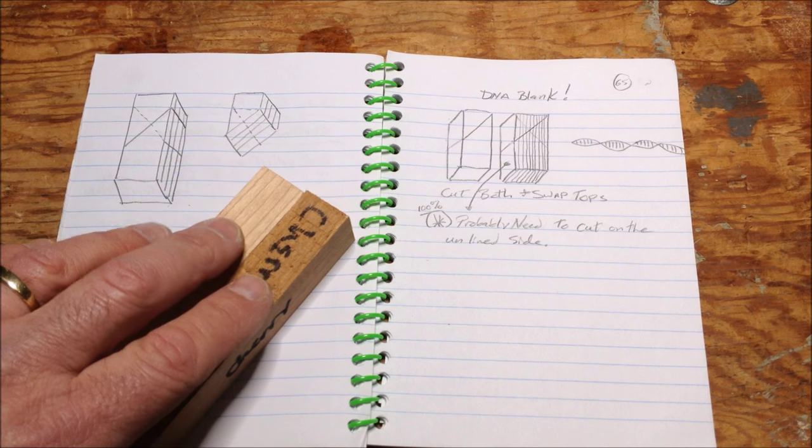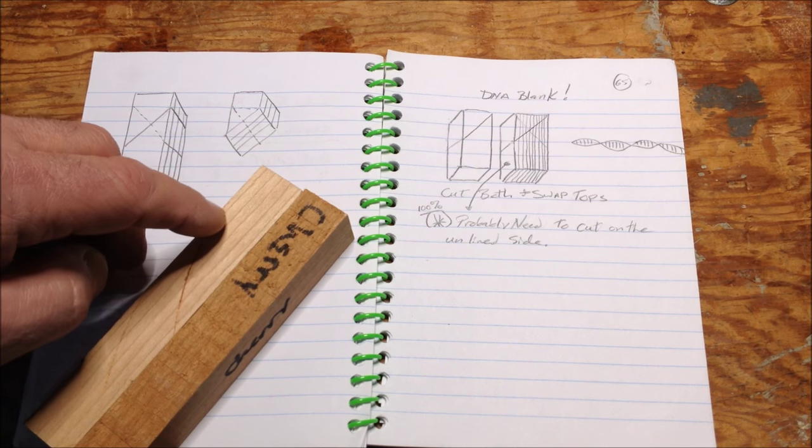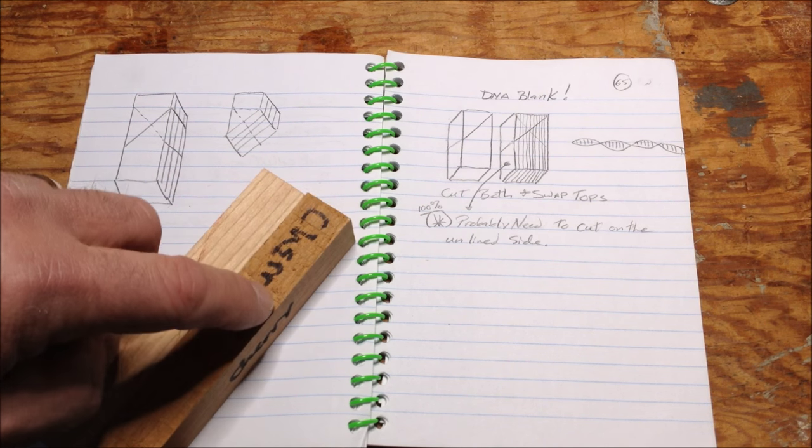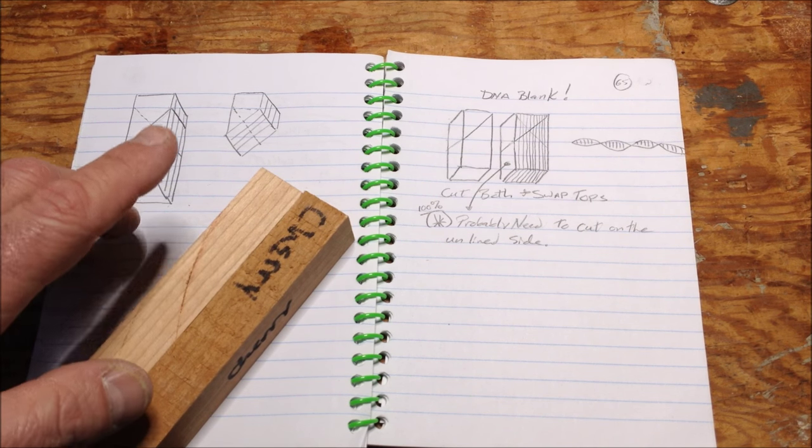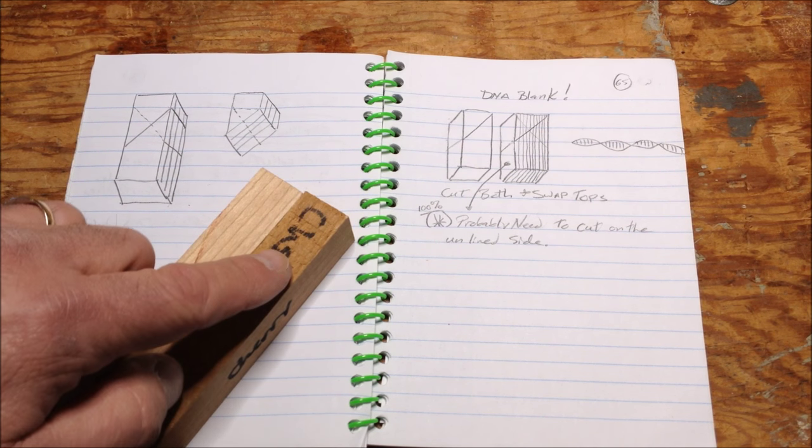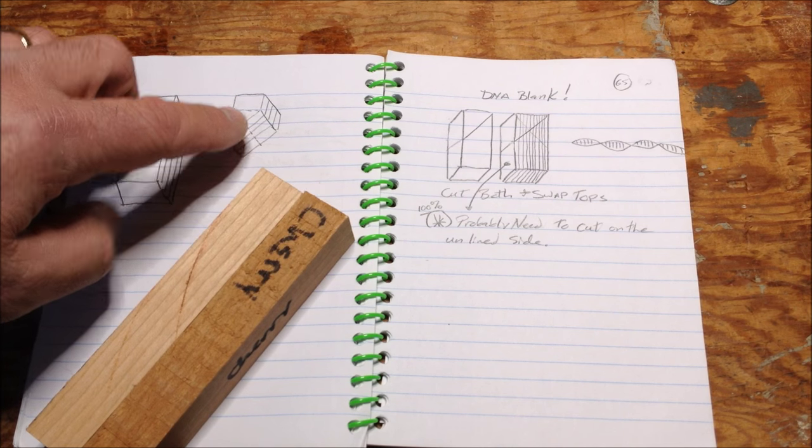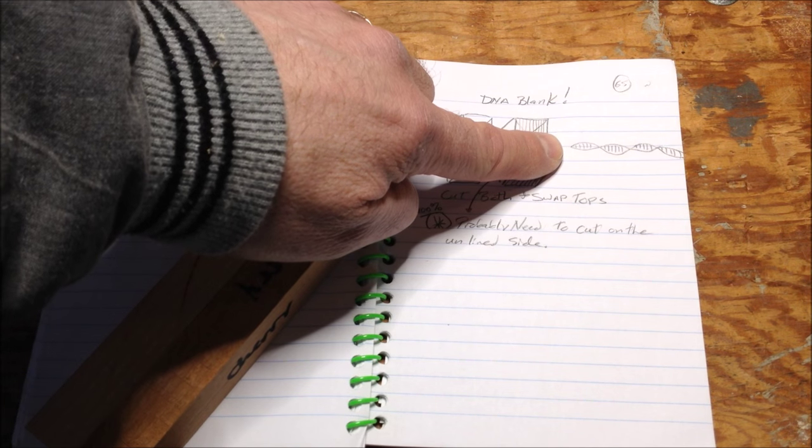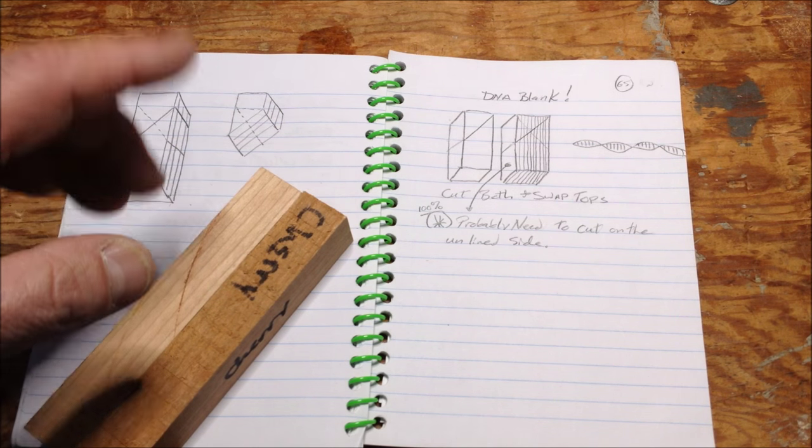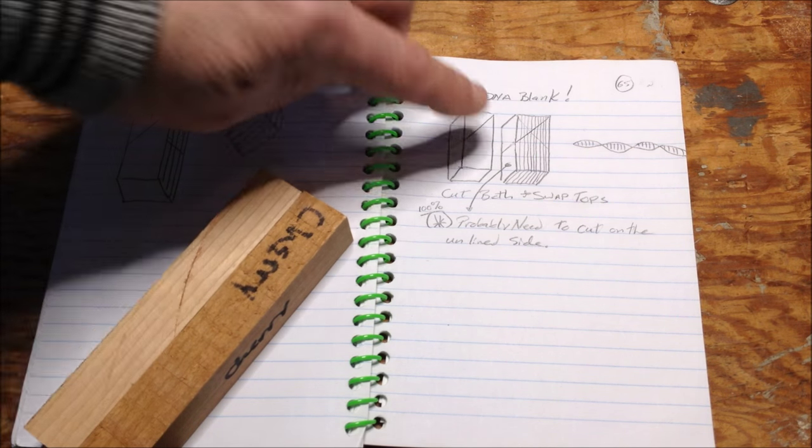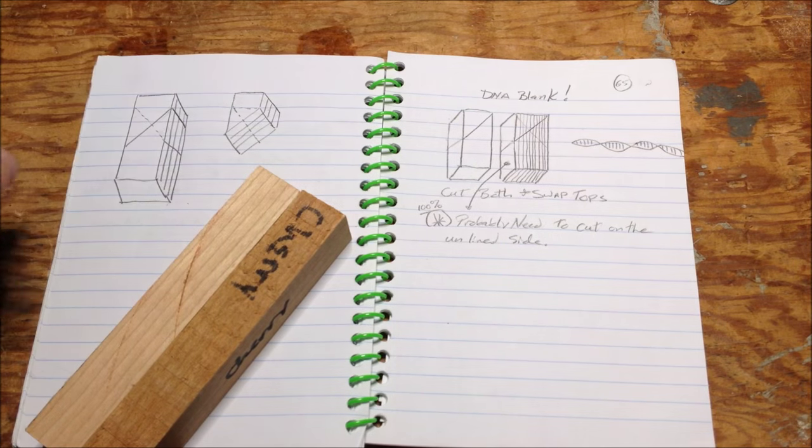Once they're glued up and the glue is dry, I'm thinking I can cut the opposite angle on both blanks, swap them again, and what that should do is give me the lines within the ovals for the DNA strands so that all I have are two ovals with hopefully about five lines apiece in them.